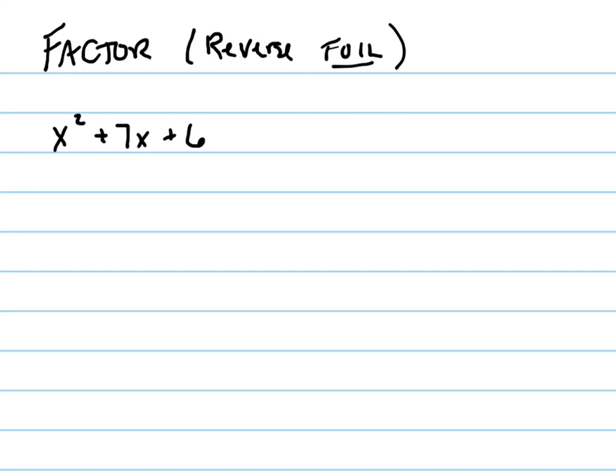Let's talk about factoring, and specifically I'm going to talk about reversing the foil process. So remember what foiling was. If I had x plus 2 and x minus 3, the way that I multiply these out is I start with the first times the first, and I write it out. So that's the first.